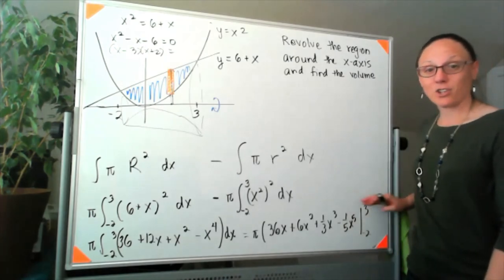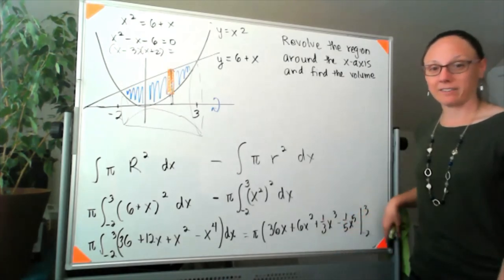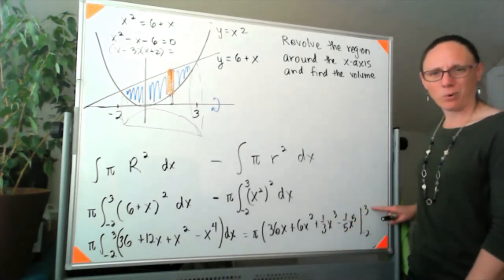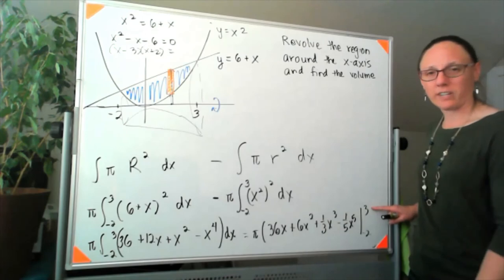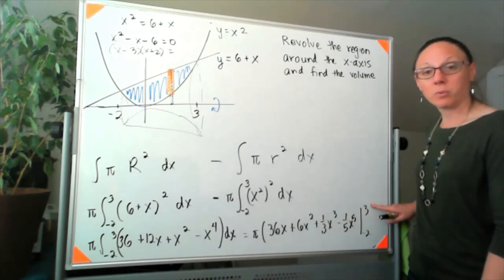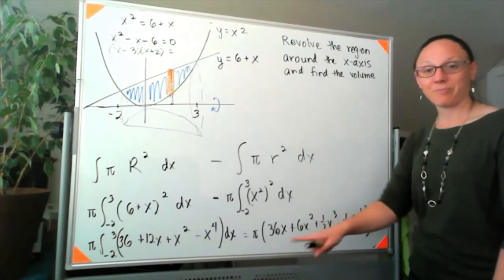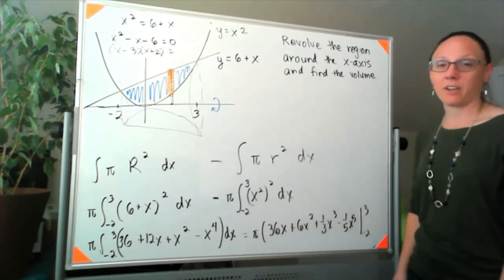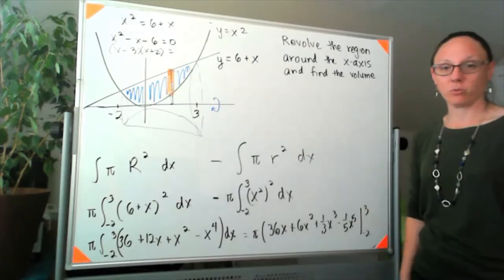You'd plug in 3 and then subtract off plugging in -2.